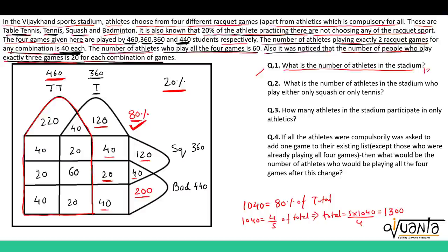So there are total 1300 athletes in the stadium. The second question is: what is the number of athletes in the stadium who play either only squash or only tennis? 'Or' means the sum of these two quantities. Only squash is 120, only tennis is 120, so 120 plus 120 gives us 240. So 240 is the correct answer to the second question.